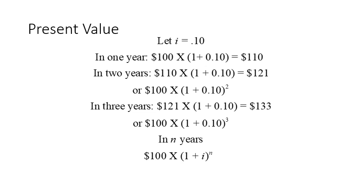If we did this for three years, the power becomes 3: 100 times (1 plus 10%)³. Generally, if you are waiting n years, we replace the power with n, and this is the general formula.